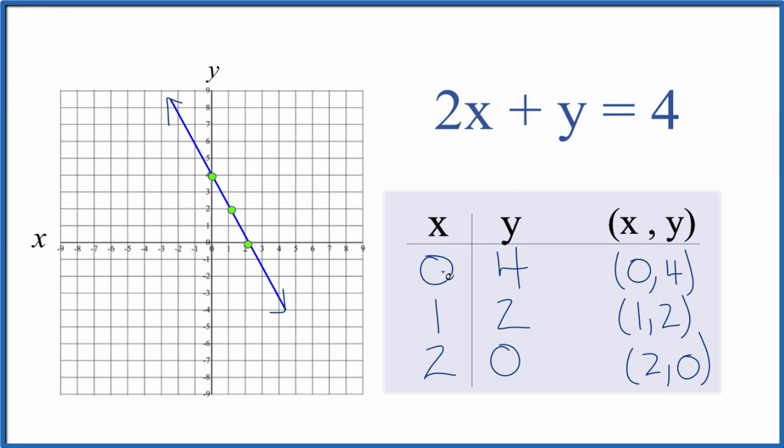We could have put different values in for x, got our values for y, and plotted those points. They'd all be somewhere on this line here. This is Dr. B. Thanks for watching.